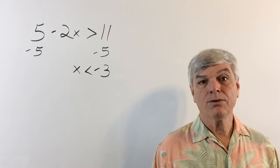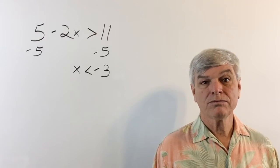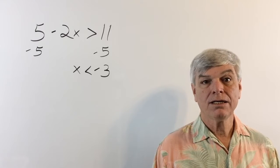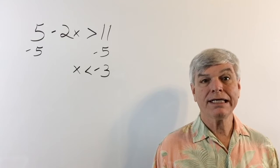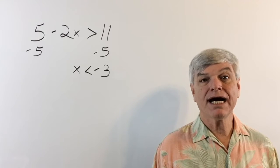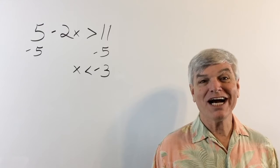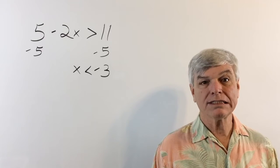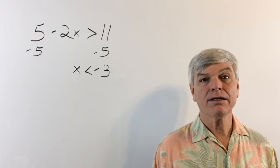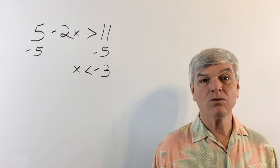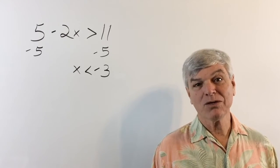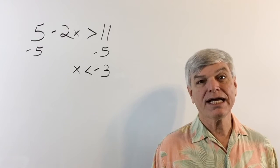Why do we flip the inequality sign? Negative x — negative means the opposite. What's the opposite of greater than? It's less than. So when we take that negative sign away, we have to do the opposite with the inequality sign. We don't do that to an equal sign, because what is the opposite of equal? There is no opposite of equal — equal is equal. So we don't need to do that for an equal sign.